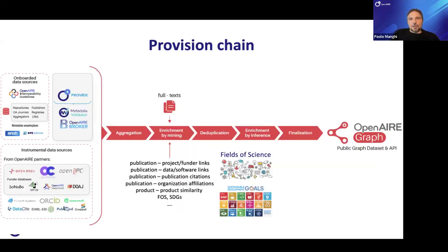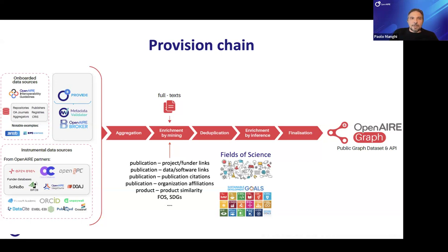Here's an overview of the production chain. On the left are the data sources we collect from. Some obey the OpenAIRE Guidelines — a community effort defining standards for metadata export — implemented as modules in platforms like DSpace or Dataverse. More than a thousand repositories today are compliant. For major registries like Crossref, DataCite, and ORCID, which have their own life cycle, we have special dedicated workflows.